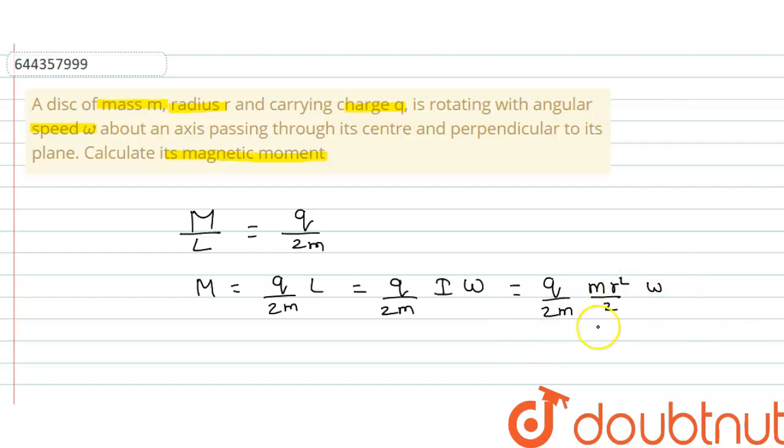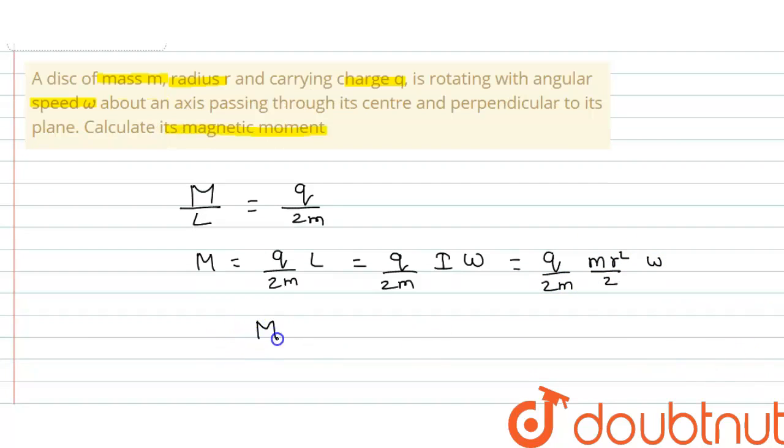Moment of inertia is equal to M R square upon 2, into omega. So from here you can see, magnetic moment is equal to Q R square omega upon 4.